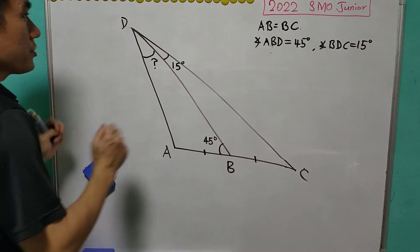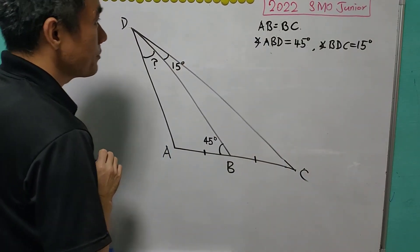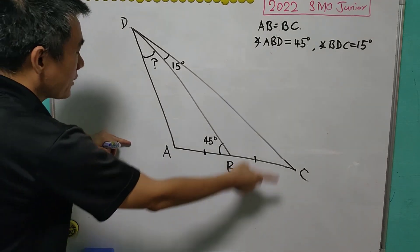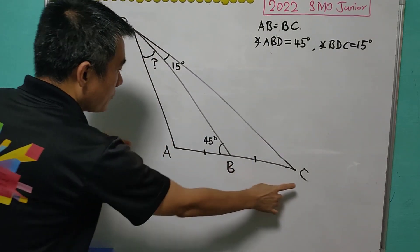For today, we are going to discuss this question from 2022 SMO junior section. For this triangle ACD, B is a midpoint of AC.